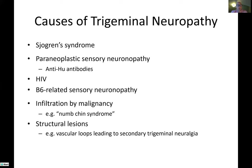There are also more structural causes of trigeminal neuropathy. There's the infamous numb chin syndrome, caused by metastatic disease to the mental branch of the trigeminal nerve, as well as other structural lesions such as vascular loops — though vascular loops tend to cause more of a trigeminal neuralgia than a trigeminal neuropathy.